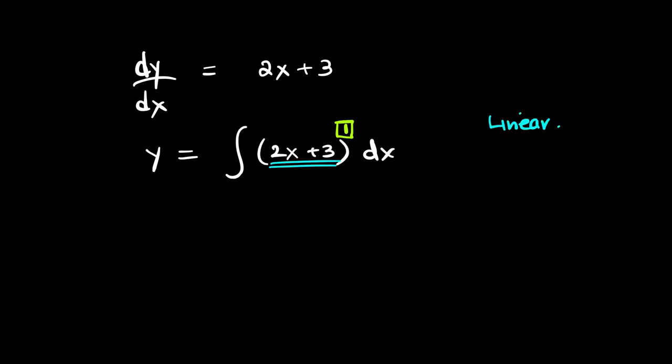So, we have dy/dx equals 2x plus 3, y equals integral of (2x plus 3) dx. Let's put a power of 1 on top of the bracket. And the second thing is, the power is anything but not equal to negative 1. That means chain rule is applicable.